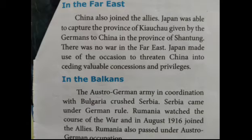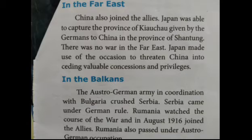War in the Balkans: the Austro-German Army — the army of Austria and Germany — joined with Bulgaria and crushed Serbia. Serbia came under German rule. Romania watched the course of the war and in August 1916 joined the Allies. But Romania was also captured by the Austro-German Army.